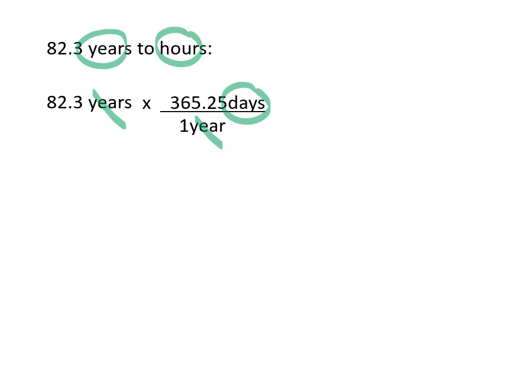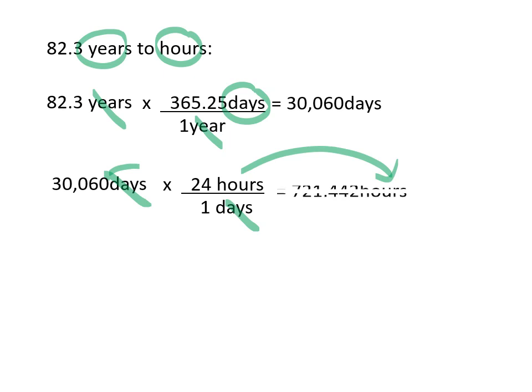So what we're going to have to do, that will give us our answer in days but then we want to convert days to hours. We know that a day has 24 hours so we can do a second conversion here. Days is on the bottom of our conversion factor. Hours is on the top so that our answer will be in hours. So we've set that up as two conversion factors. Realize that we've written this answer here of 30,060 days.